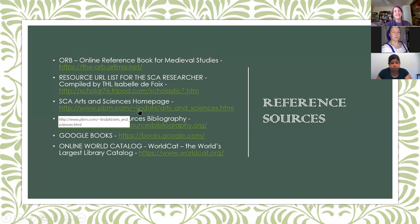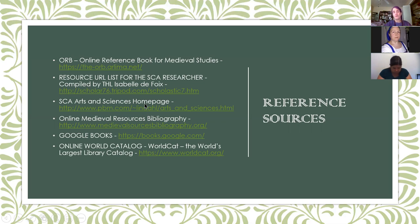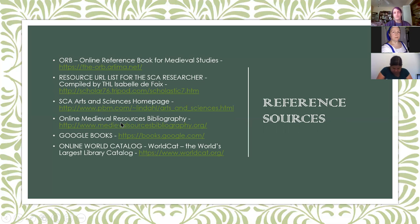The SCA Arts and Sciences homepage — you can find that link also on the SCA main website under resources and research. That's a very good one too. Both these links are really comprehensive because they break subjects down like a library and make them accessible, and they update their links as often as they can. Another good place is the Online Medieval Resources Bibliography, which gives you citations for books and articles to help with your research.